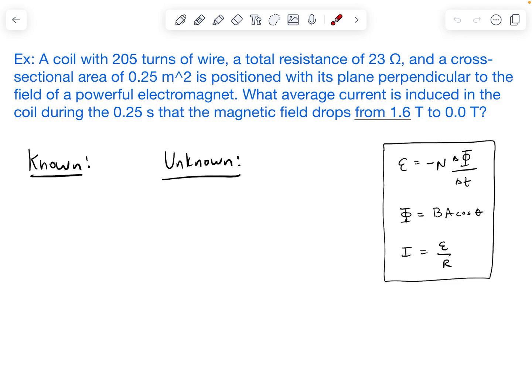All right, so the equations that we're going to be using here are found to the right. This right here is Faraday's law. The epsilon here represents the electromagnetic field, n represents the number of turns of the coil, phi is your magnetic flux, and time is the time that the induction was basically occurring. We also have an equation specifically for magnetic flux. That's the magnetic field strength times the area times the cosine of the angle that it's directed towards.